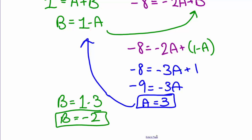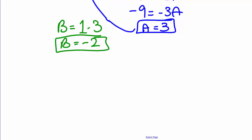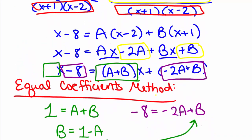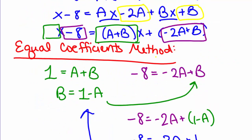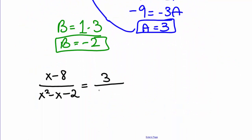We've now determined our numbers A and B. So our original expression, (x minus 8) over (x squared minus x minus 2), equals 3 over (x plus 1) plus negative 2 over (x minus 2). We have completed the partial fraction decomposition and rewritten our rational expression as a sum of two fractions.